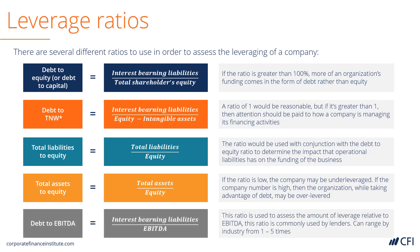Finally, we have the debt-to-EBITDA ratio. This ratio, unlike all of the others, requires the income statement in conjunction with a balance sheet. In this case, we take the total interest-bearing liabilities and divide them by earnings before interest, taxes, depreciation, and amortization. This is a common way of referring to how levered a company is — for example, is it levered at two, three, or four times EBITDA?